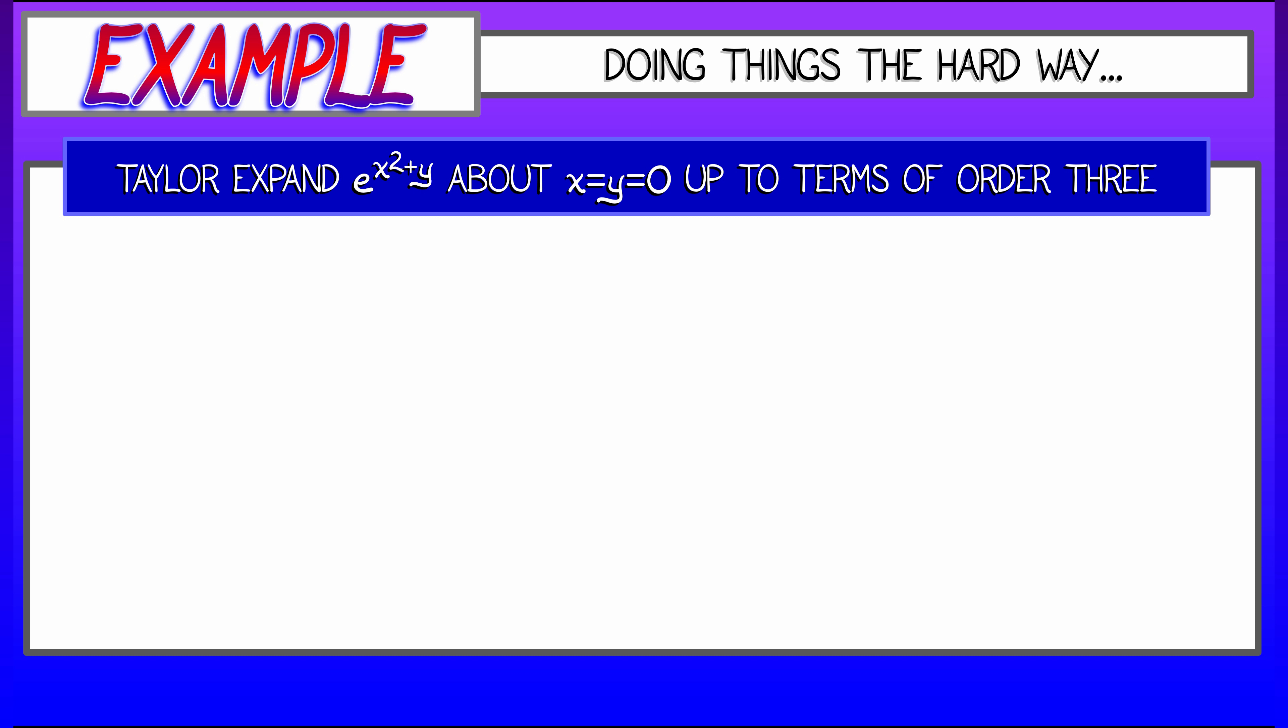Let's build a big old table where we write out the multi-indices i and then all of the terms associated with it. For the 0,0 term, we're just taking the zeroth derivative of the function. It's just e to the x squared plus y. Evaluate that at the origin, I get 1, and that's it. That's my zeroth order term.